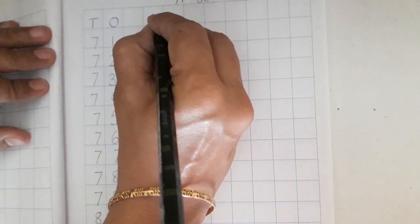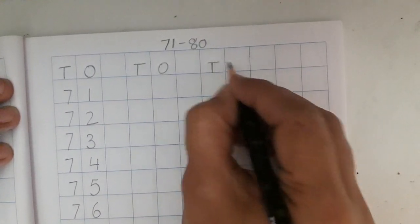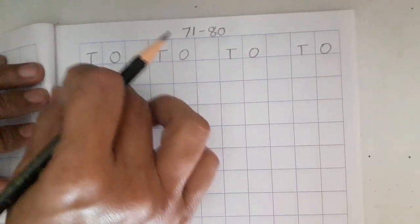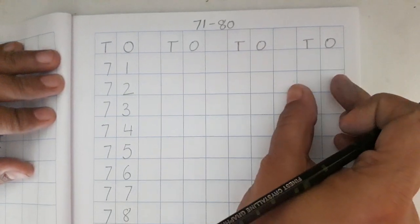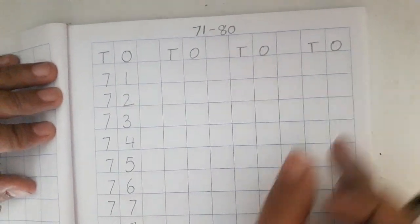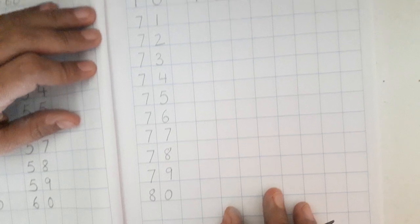Children, this way, we are going to write 71 to 80 four times. One here, I have shown you. And second time, third time and fourth time. This way, we are going to write 71 to 80.